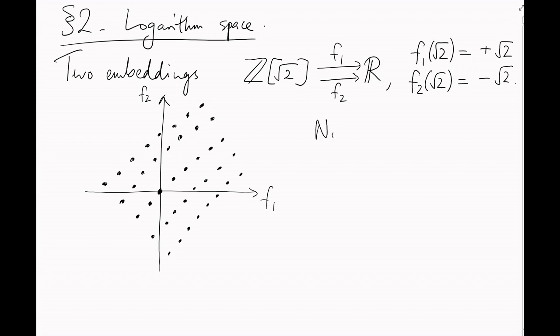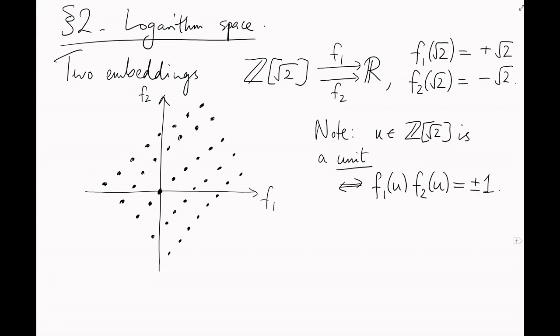And we noticed that an element u of z-adjoin root 2 was a unit if and only if f1 of u times f2 of u was equal to plus or minus 1. That means our units lie on these hyperbolas here. How can we describe them?